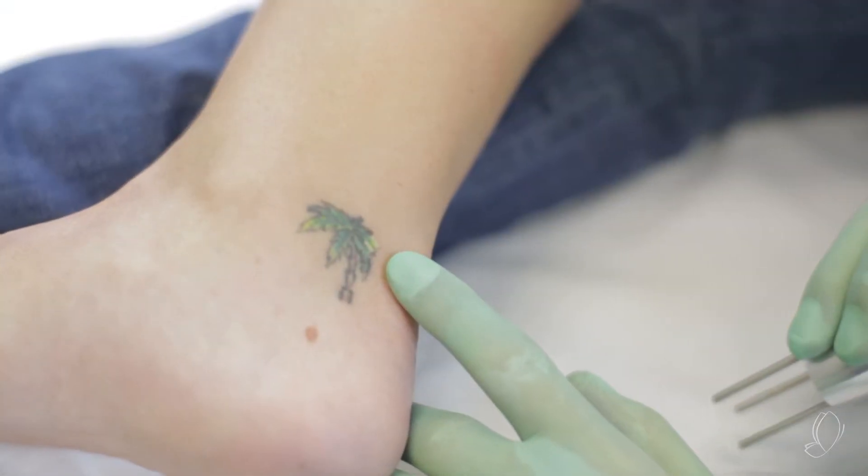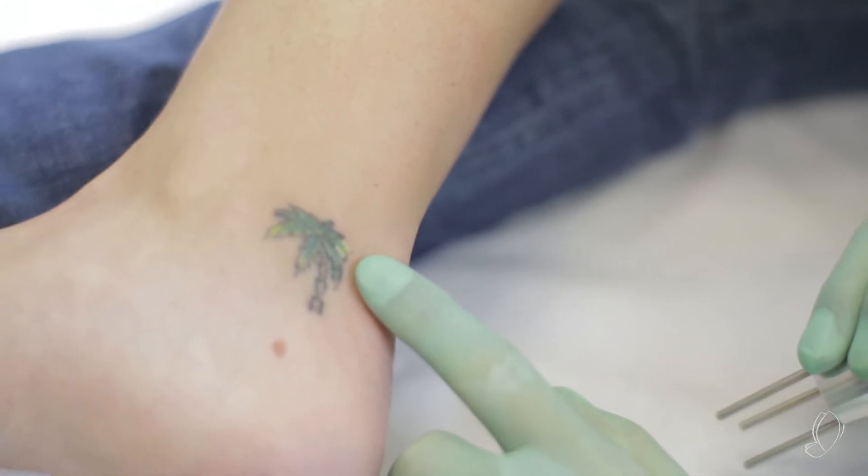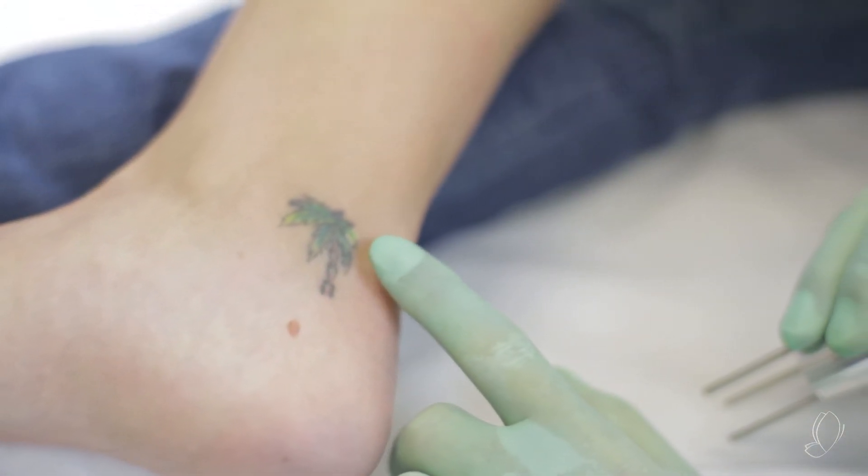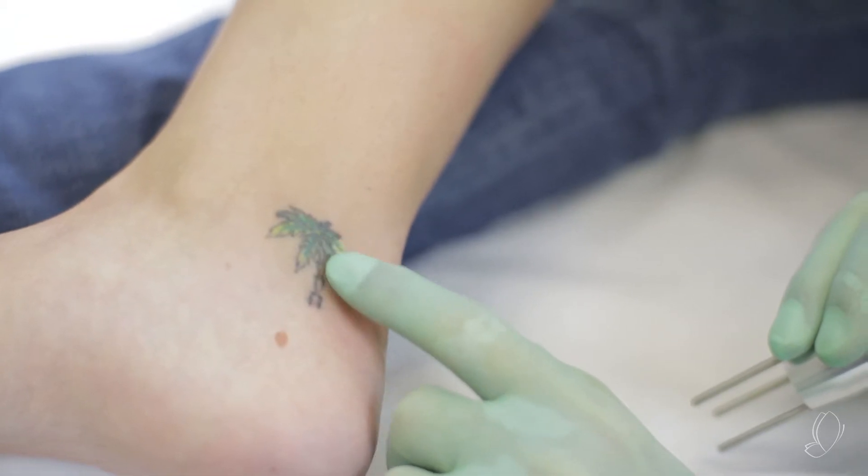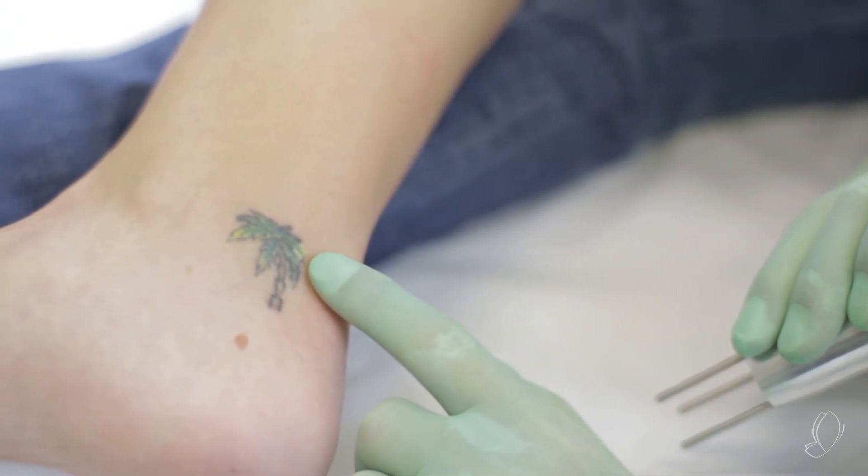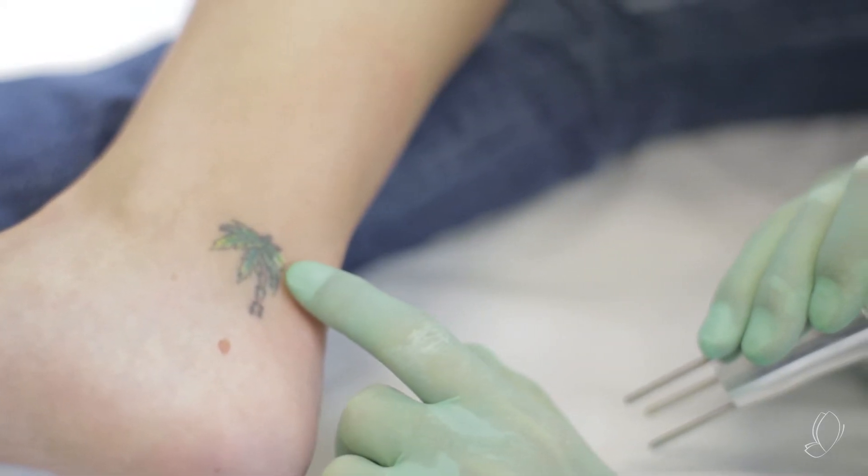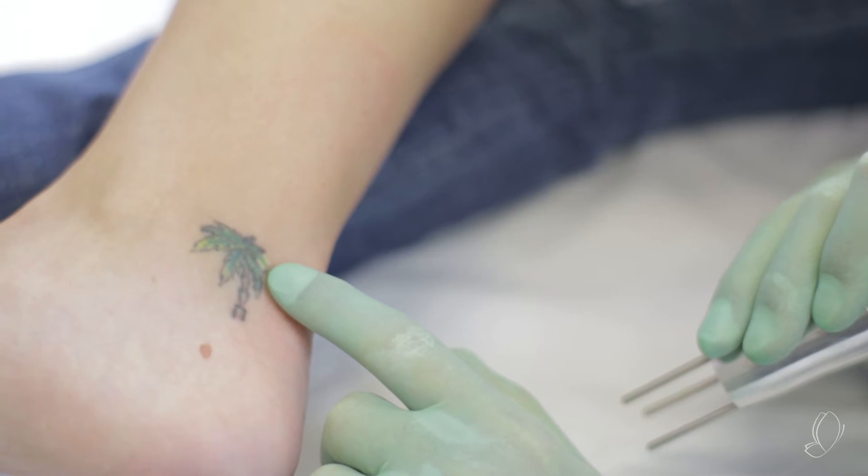So one of the things that's really interesting here is you'll see that we're using the 1064 wavelength. That 1064 on the outline where we'd expect was incredibly well absorbed, the black outline of the palm tree. The inner part of the tree, which was filled with green, which would really be best absorbed by a 694 ruby wavelength, you can tell that it's still almost untouched ink.